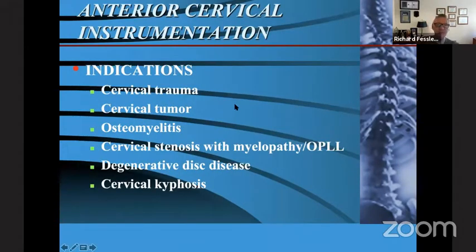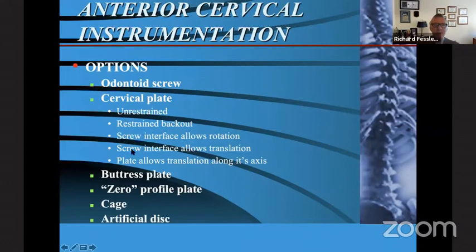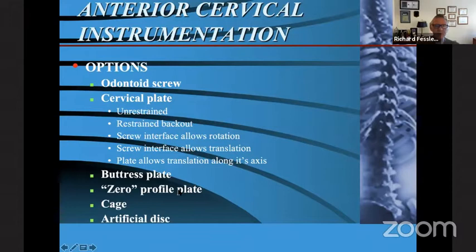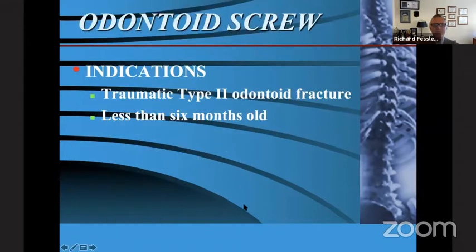How about anterior instrumentation? Indications for using anterior instrumentation include cervical trauma, cervical tumor, osteomyelitis, cervical stenosis with myelopathy or OPLL, degenerative disc disease, and cervical kyphosis. Options for anterior cervical instrumentation are odontoid screws and cervical plates — with a variety of types: unrestrained, restrained, back-out screw interface allowing rotation, translation along the plate axis, buttress plates, zero-profile plates and cages, typical cages, and artificial discs.